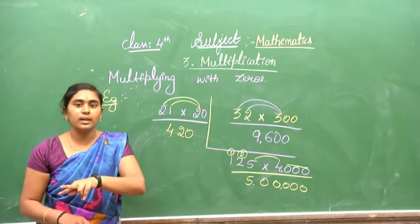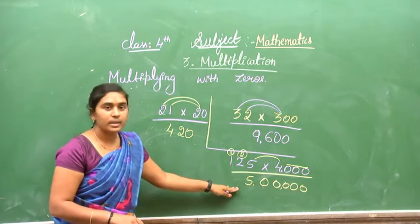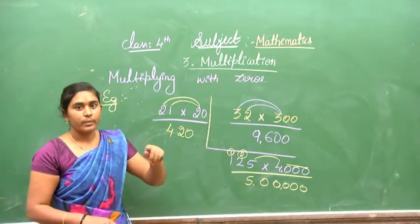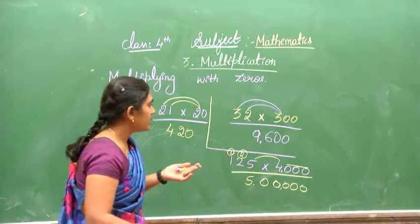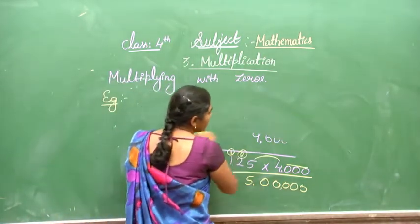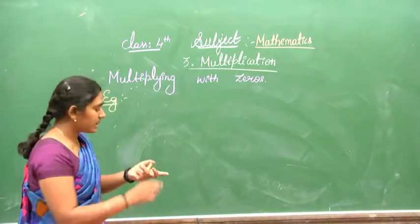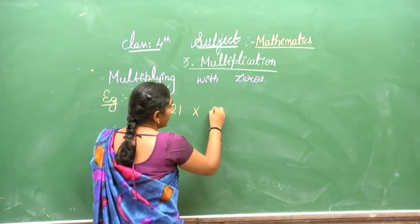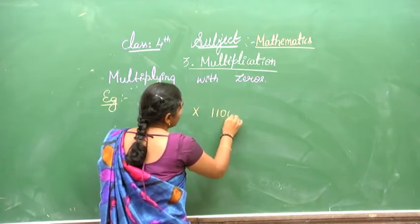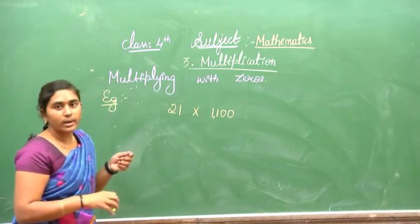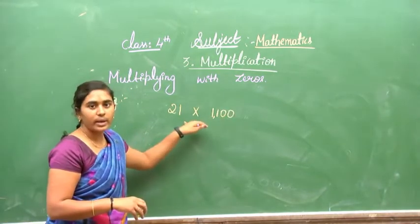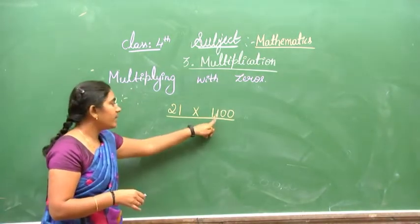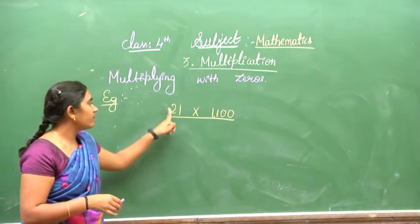If it is 2-digit multiplied by 2-digit, that is a different case. This method is easy because we are multiplying with a single-digit number. You may not always get a double-digit carry. We will see one example of a double-digit multiplier: 21 multiplied by 1,100. We multiply 11 with 21.